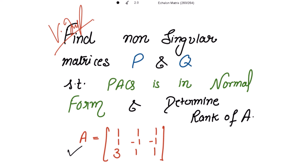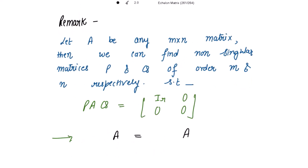Before moving on to the solution, we need to read this remark first. Let A be any M by N matrix. Then we can find non-singular matrices P and Q of order M and N respectively, such that PAQ is in its normal format — that is, a matrix with an identity submatrix IR of order R, and zero submatrices elsewhere.